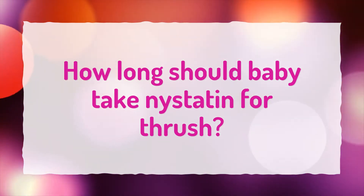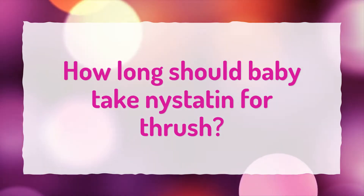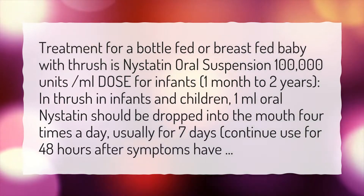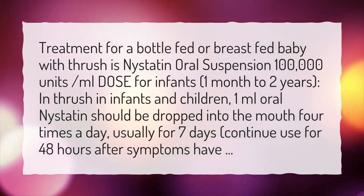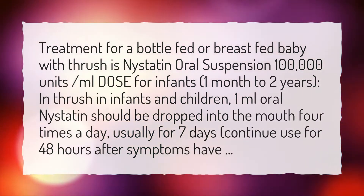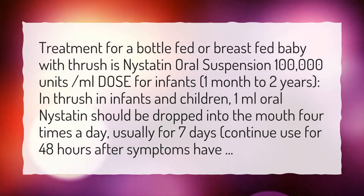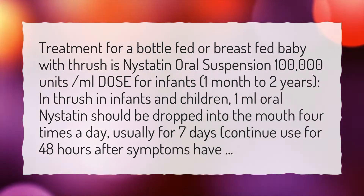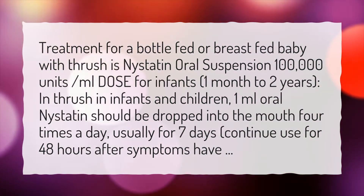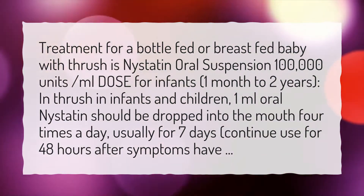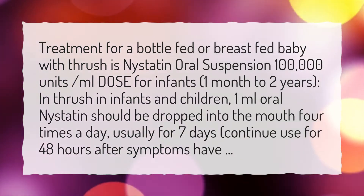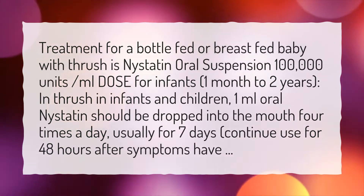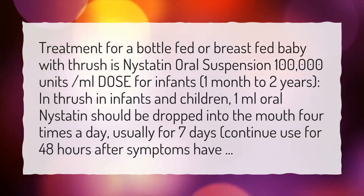How long should a baby take Nystatin for thrush? Treatment for a bottle-fed or breast-fed baby with thrush is Nystatin oral suspension 100,000 units per milliliter. For infants one month to two years, one milliliter of oral Nystatin should be dropped into the mouth four times a day, usually for seven days. Continue use for 48 hours after symptoms have resolved.